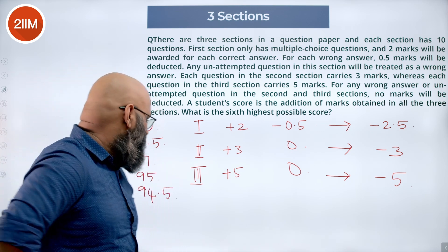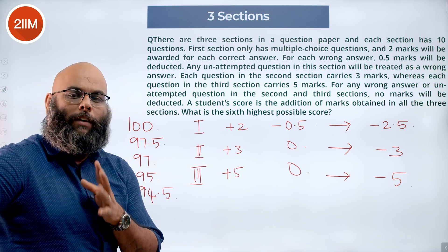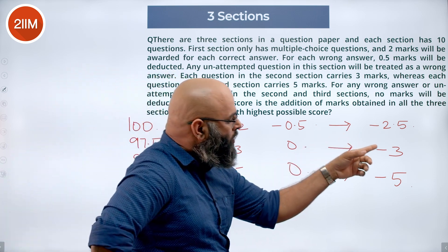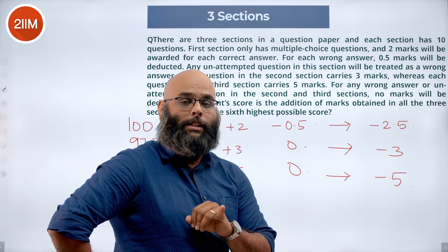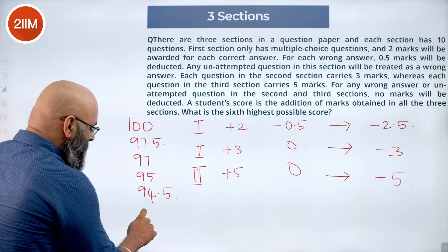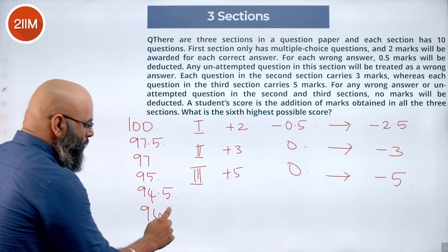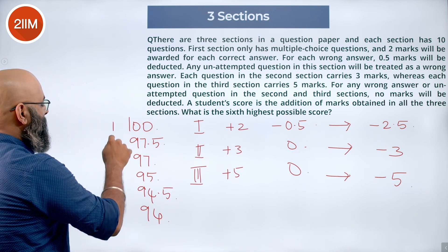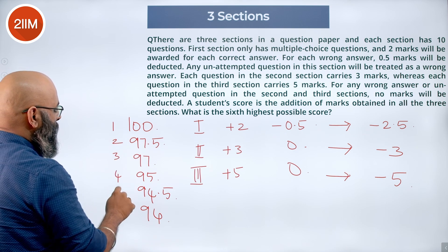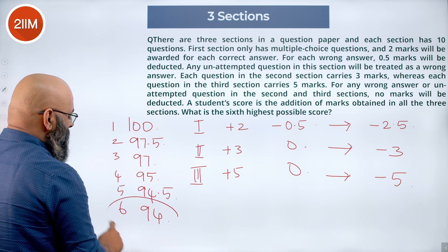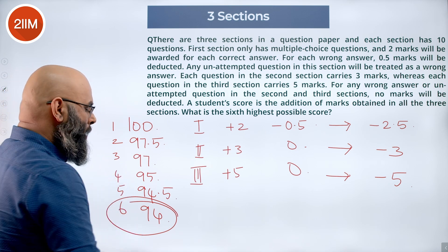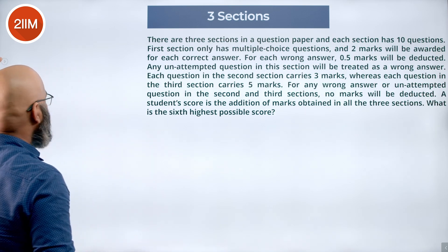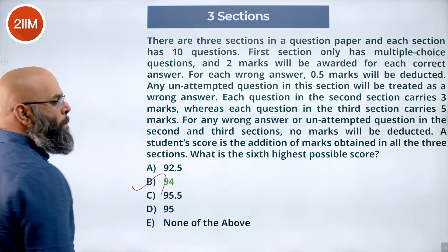What is going to be the sixth highest mark? Which other two combinations is going to be just more than 5.5? You will notice that a student can lose out on two questions in the second section, thus losing out on 6 marks. That means the person gets 94. The sixth highest possible marks that a student can get is 94. So the answer option is option B.